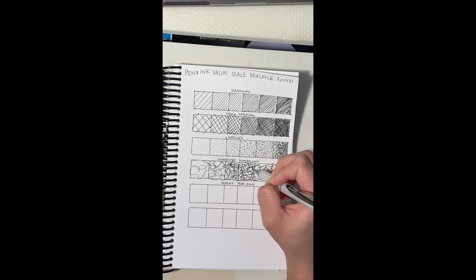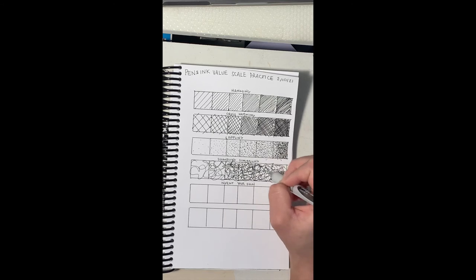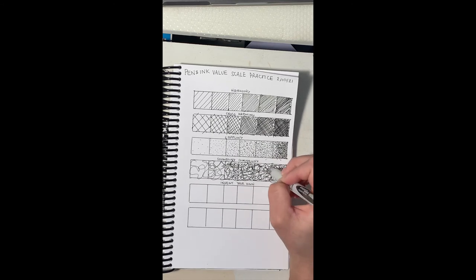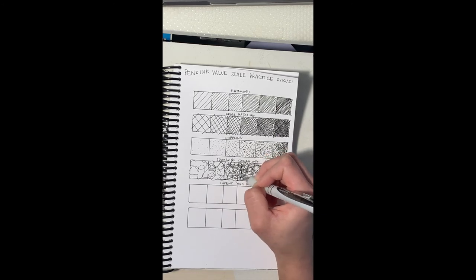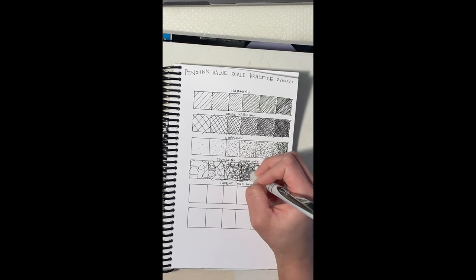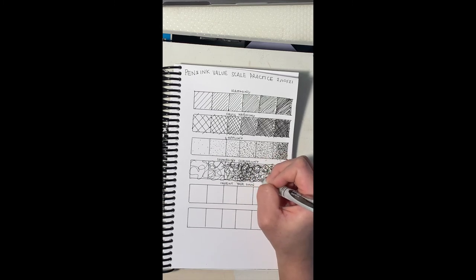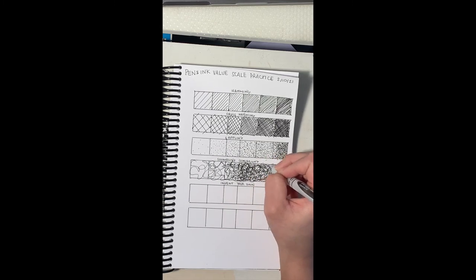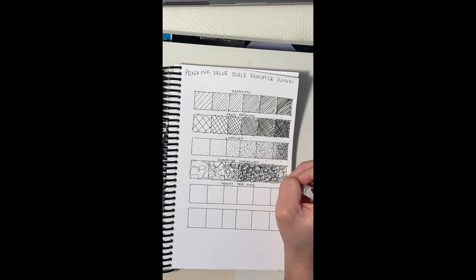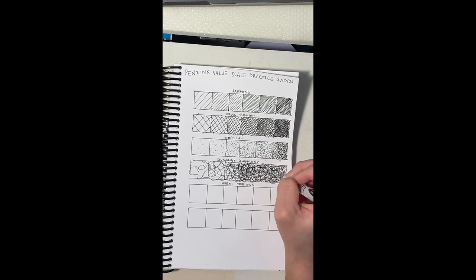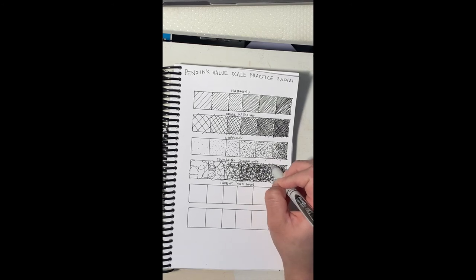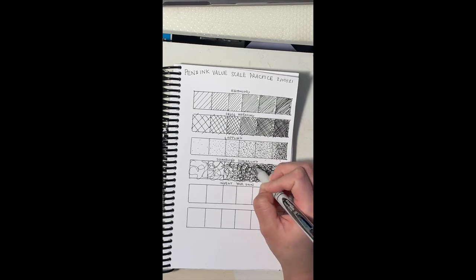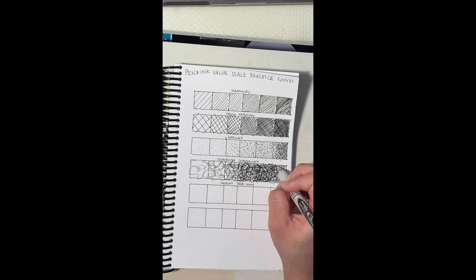After doing stippling, it's kind of nice to take a break and do a little bit more of a relaxing value technique. And just build that up. It looks a little bit messier, but it also creates an interesting texture. So take that into consideration when you're thinking about how to achieve value using pen and ink.